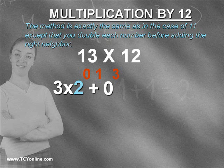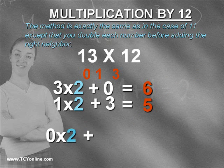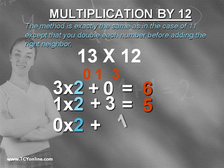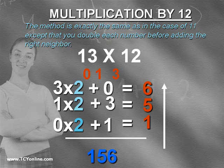Since there is no neighbor on the 3, so twice it and add 0 to it. This will simply give us 6. Similarly, twice the next digit and add the right neighbor. This will give us 5 and 1. Now write down the numbers from down to top. So our answer will be 156.